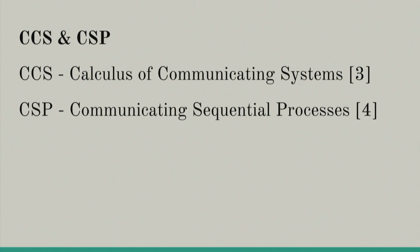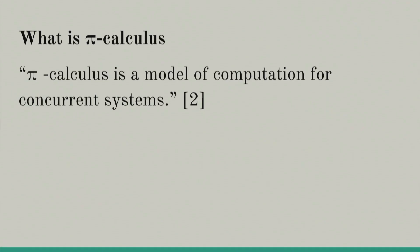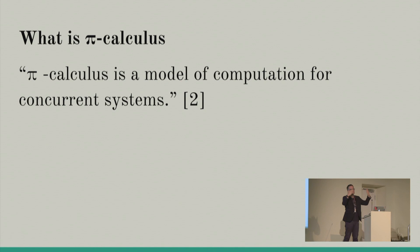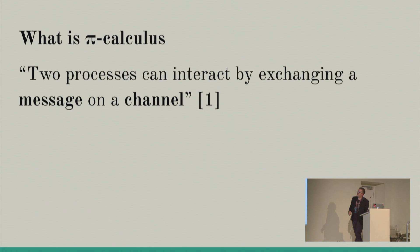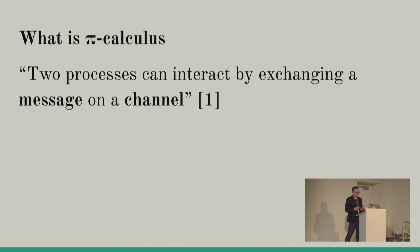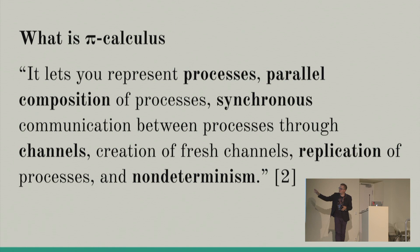In the 80s there were two formalisms: Robin Milner's Calculus of Communicating Systems and Tony Hoare's Communicating Sequential Processes. But we're not going to talk about them because the more cool one is called pi-calculus. Pi-calculus is a formalism that allows you to model computation in concurrent distributed systems. As lambda calculus gives you a concept of a function, pi-calculus gives you a concept of a process. Processes exchange messages between each other through channels.